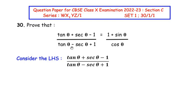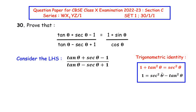In the numerator and denominator there is a tan θ and sec θ, and we have a relationship between these two given by the trigonometric identity: 1 + tan² θ = sec² θ. Looking at the numerator, there is a 1, and this formula also has a 1, so we take tan² θ to the other side, giving us 1 = sec² θ − tan² θ.